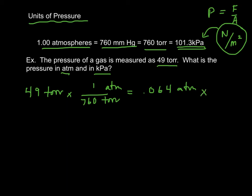And we can keep going if we want, and we'll convert ATM to kilopascals, which is 101.3. And that will give us 6.5 kilopascals. So easy to do, but you're going to have to convert between the different units of pressure quite a bit.